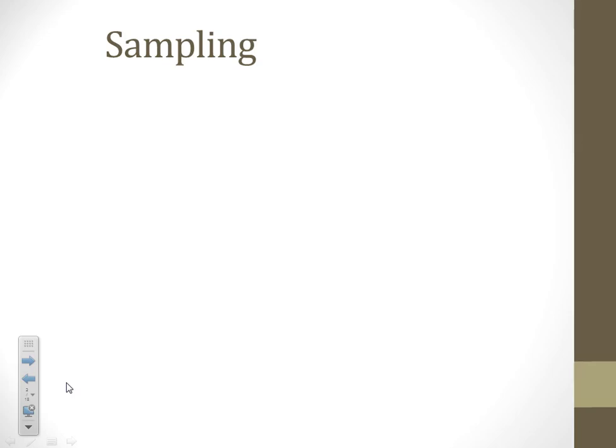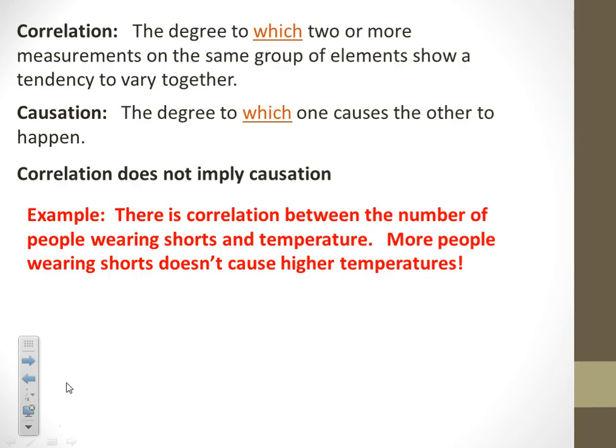Let's look at example two. It says: when John wears his lucky hat, he scores at least 120 points in bowling. That's probably a correlation — just because he wears a green hat doesn't actually affect his game or make him bowl better. So there's a correlation there, but it's not causation.